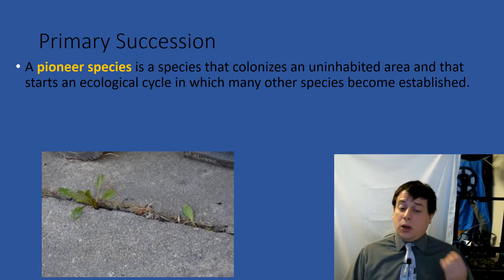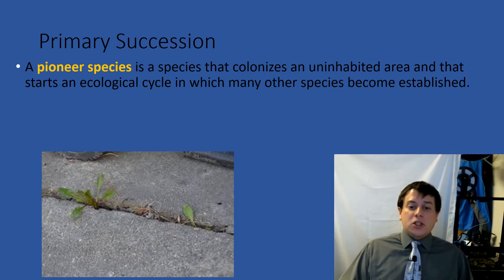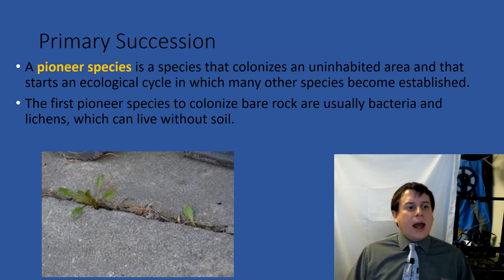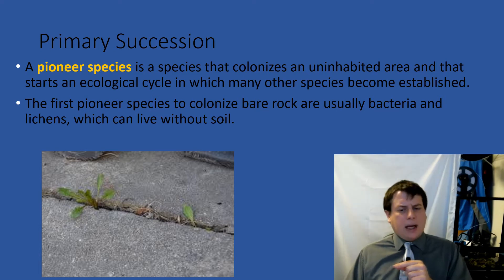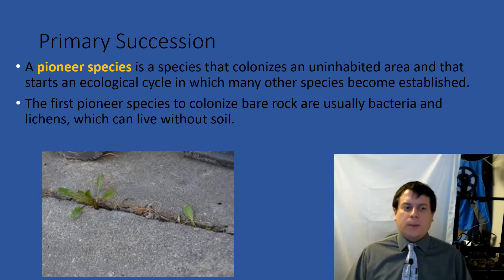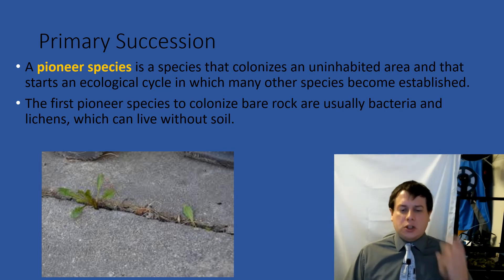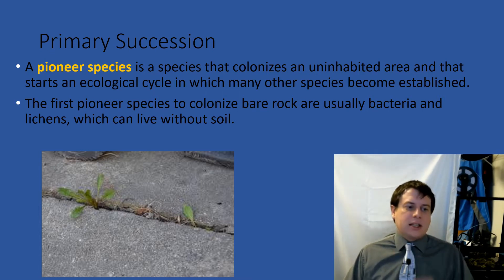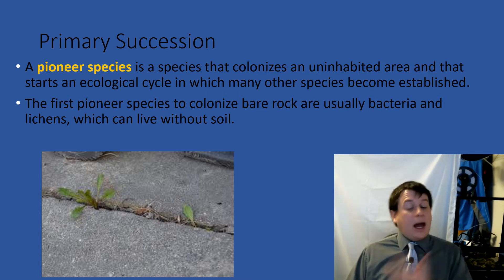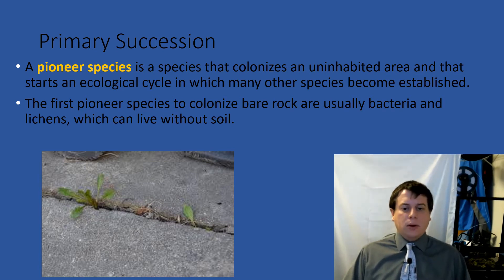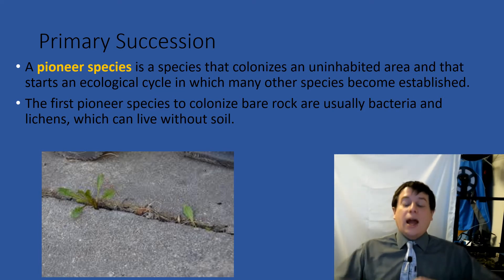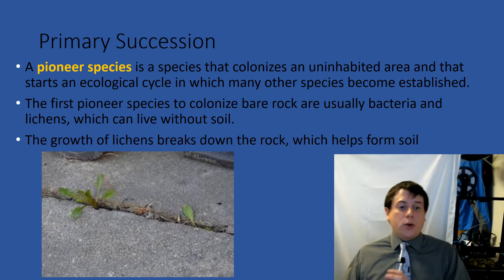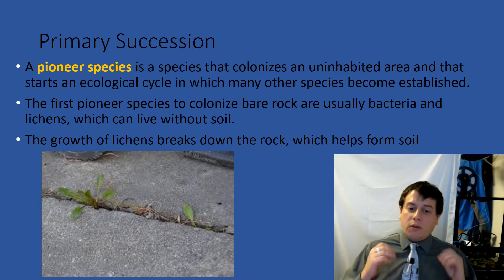A pioneer species is any species that can grow in an uninhabited area that starts an ecological cycle where other species may become established. Lichens and mosses are pioneer species, but in some cases this can be grasses as well. Once the pioneer species have done their job and there's a little bit of soil built up, you can get some early grasses. That crack in concrete with a tiny bit of soil built up — once those first species colonize that bare rock and start to build up the first layer of organic matter, as they die and fill in those crevices, that becomes the first soil. Dandelions are actually a type of second pioneer species — they can grow in those small amounts of soil and produce more soil, breaking up that rock even further. The growth of lichens breaks down that rock, which helps form the first soils.